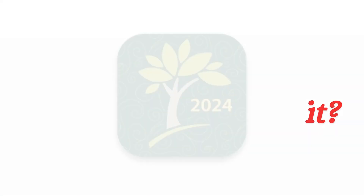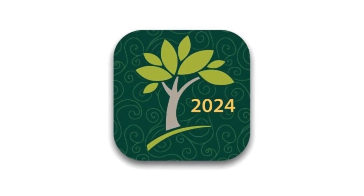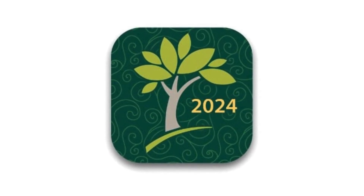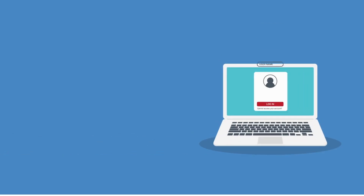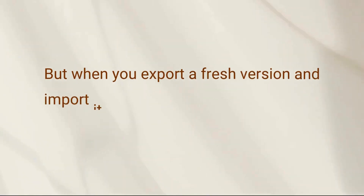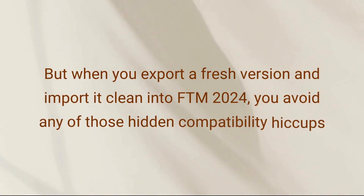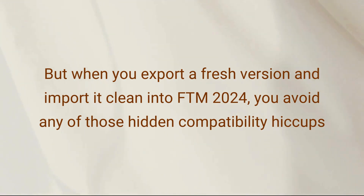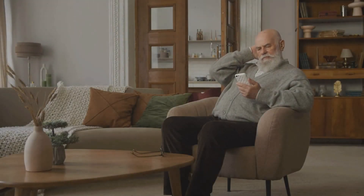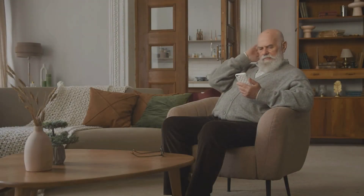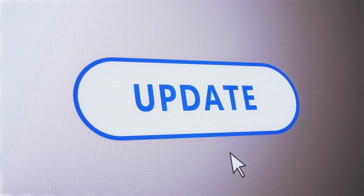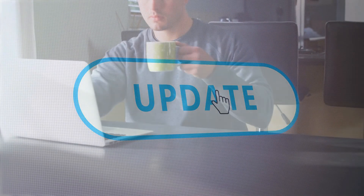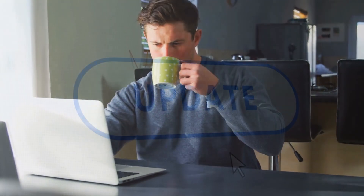So why does this fix it? It seems that when FTM 2024 converts a tree in place — especially if it was left open during the upgrade — some underlying file references or internal links might cause the software to stall during future loads. But when you export a fresh version and import it clean into FTM 2024, you avoid any of those hidden compatibility hiccups. It's like giving your tree a fresh set of clothes tailored for 2024.